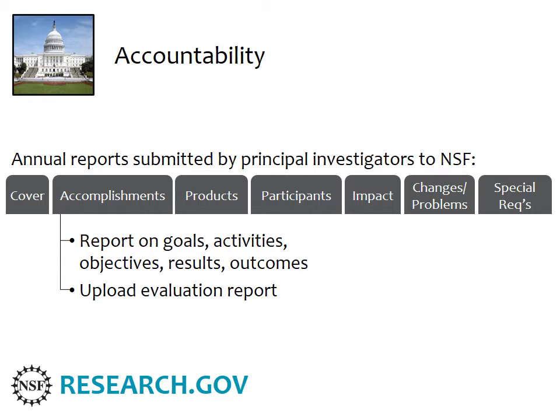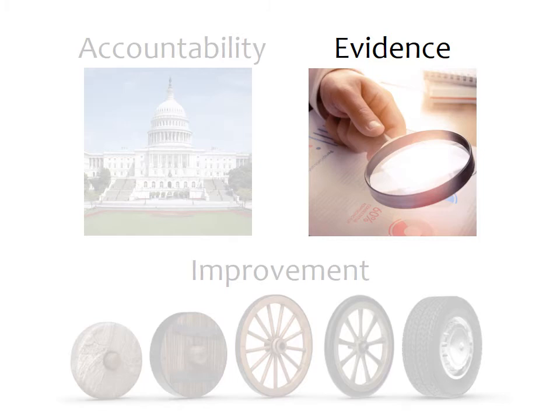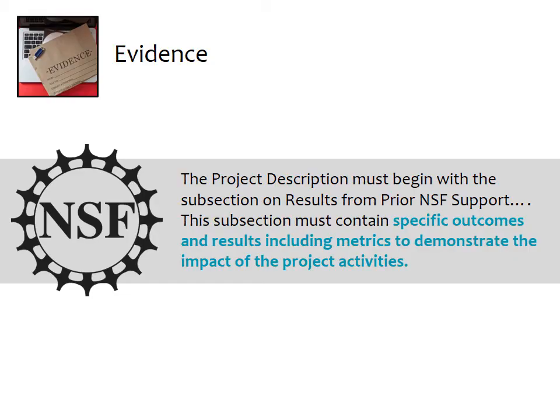This section is also where grantees upload their evaluation reports so their NSF program officers can review them. If a project encountered problems or opportunities to shift a project's focus to maximize outcomes, evidence to substantiate a change in plans can be included in the section for changes or problems. In addition to providing evaluation results annually to NSF as an accountability function, NSF grantees also need evidence of project outcomes if they apply for another grant from NSF in the future. If Jen goes back to NSF in a few years to request funding for a new project, she'll have to begin her proposal with a section called Results from Prior NSF Support, which must include evidence of specific outcomes and results, including metrics to demonstrate the impact of the project's activities.